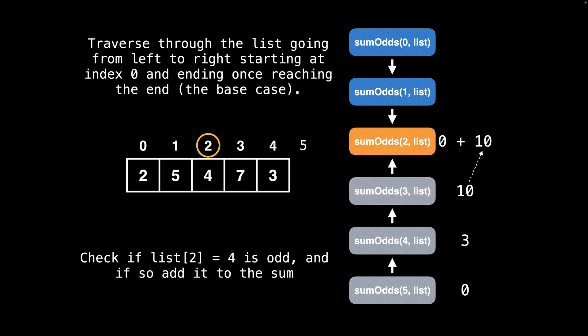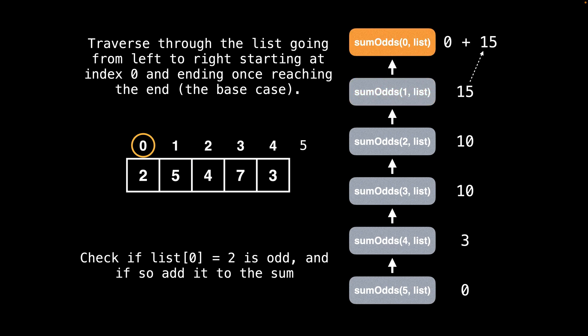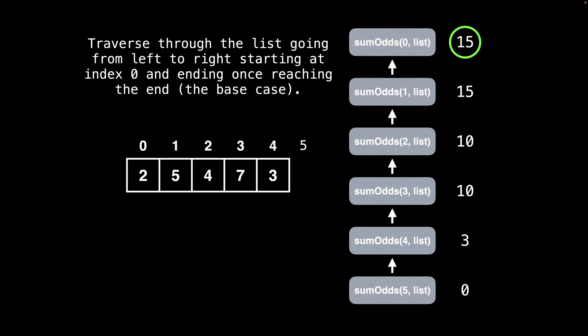Then the same thing for index two, then we check if the number at index one is odd and add it to the total. In the end we get that the sum of all the odd numbers in the list is 15, and we can easily verify this by adding five plus seven plus three, which when all added together is 15.